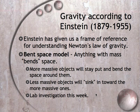Einstein came up with the theory of the bent space model. Anything with mass bends space. Imagine graph paper all over the universe going in every direction — up, down, left, right, front, back, diagonally. Put a rock on that grid, and as that rock touches the grid, it bends it — in all those directions.